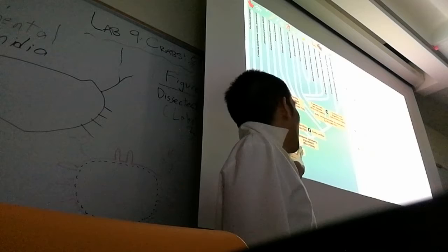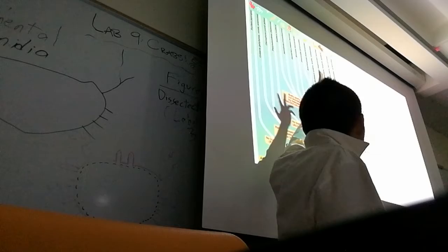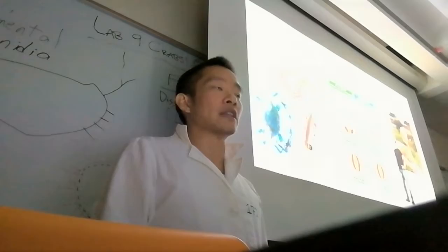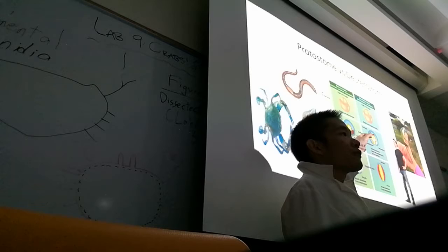body cavities, and finally they're protostomes. So we're finally going to learn about what exactly protostomes and deuterostomes are. This refers to the embryo. In the embryo of an animal, the first opening that forms is called the blastopore.